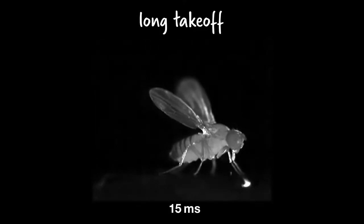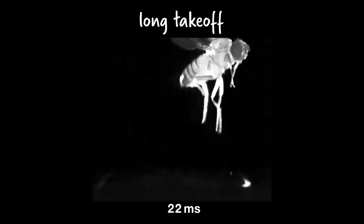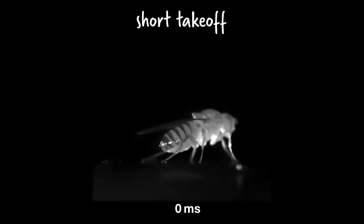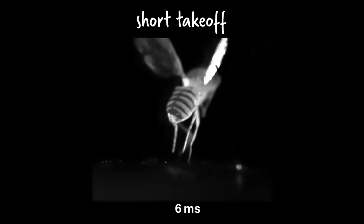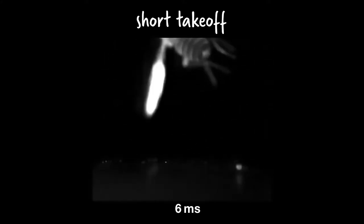In a long takeoff, the fly first extends its wings, then elegantly jumps off the ground while starting to flap. In a short takeoff, the fly just jumps. With folded wings, the fly tumbles in the air and must spend time and energy righting itself.